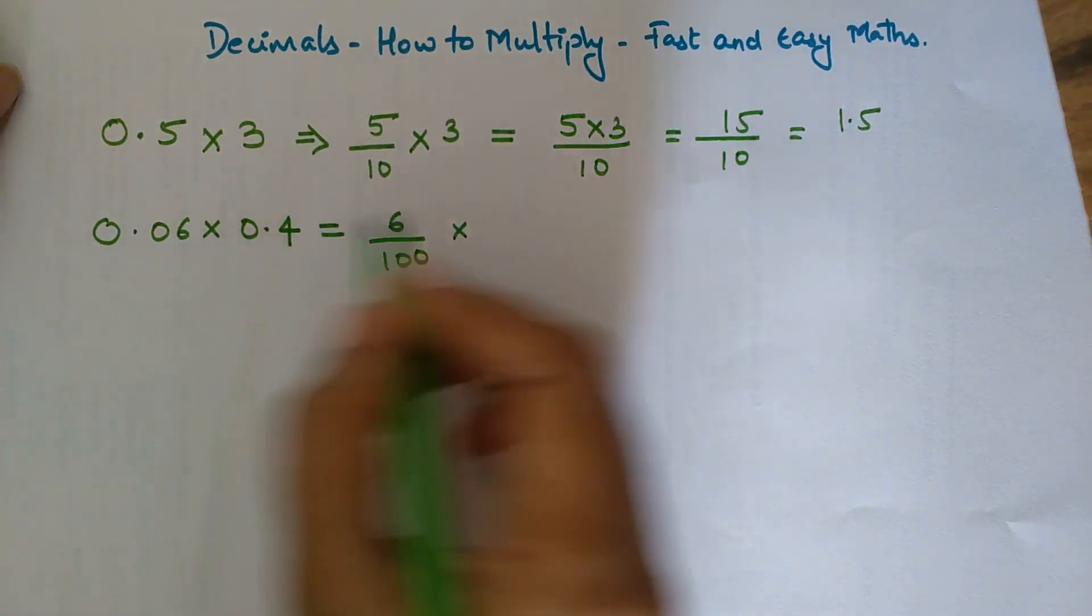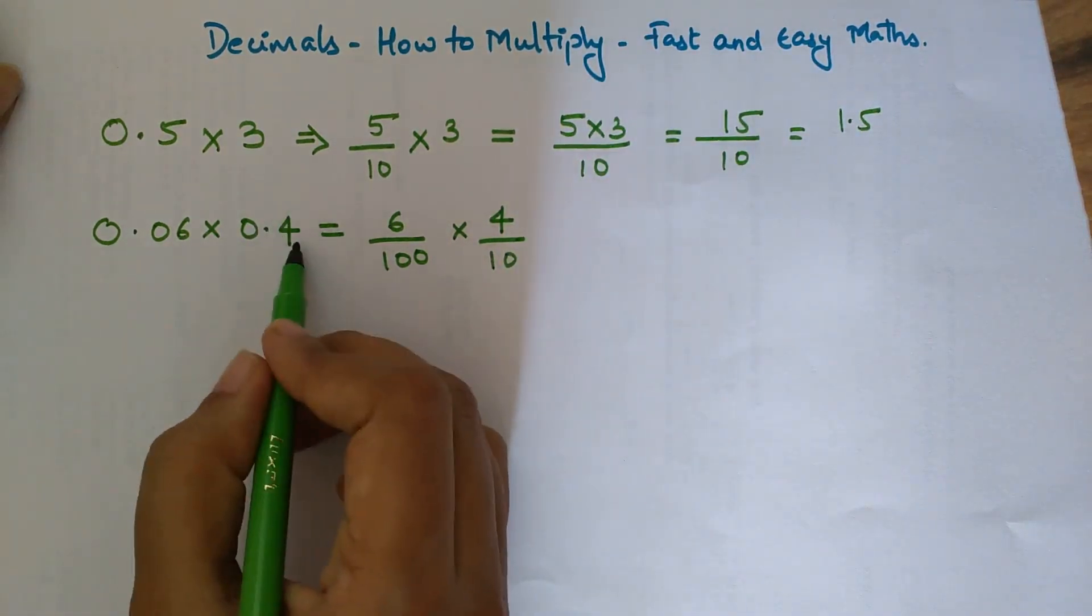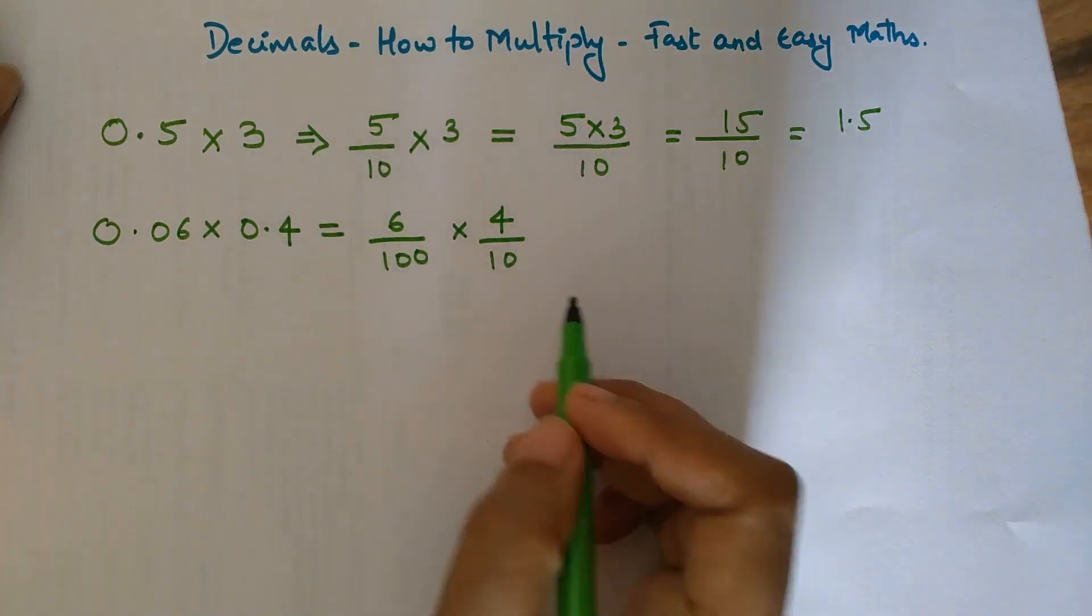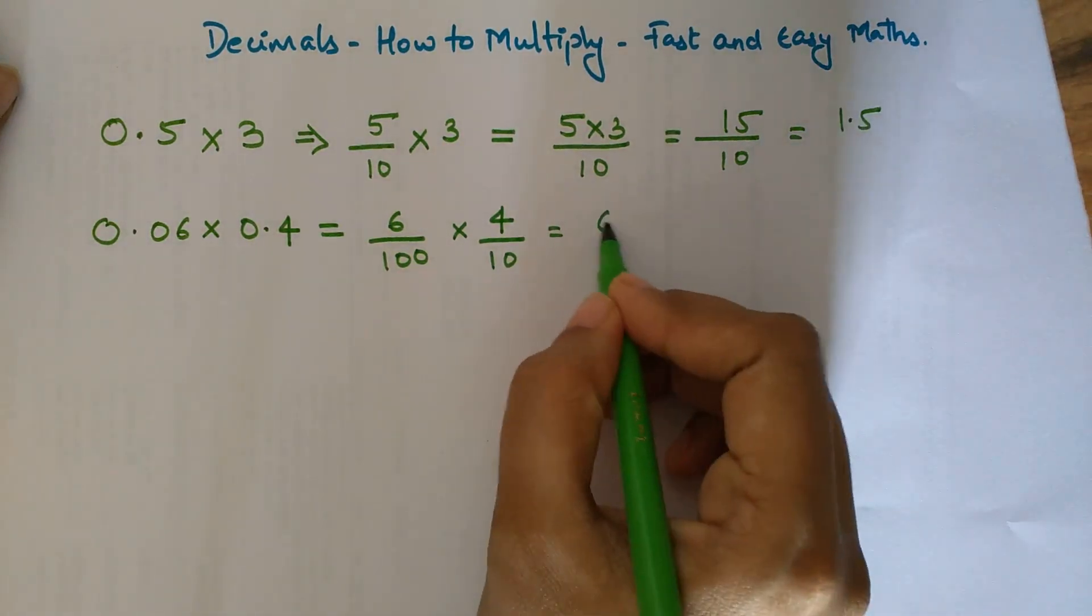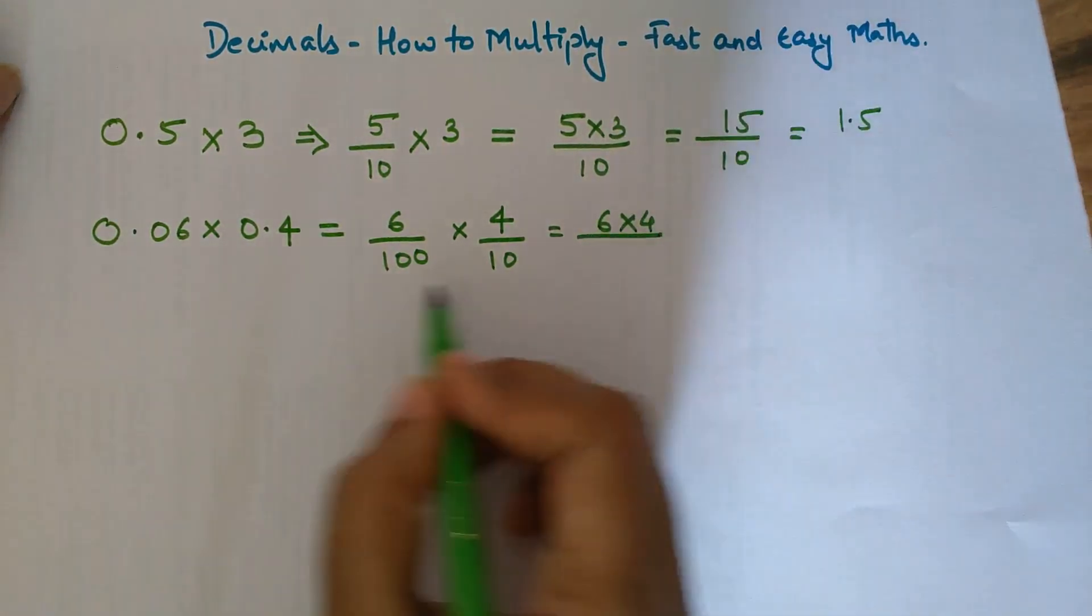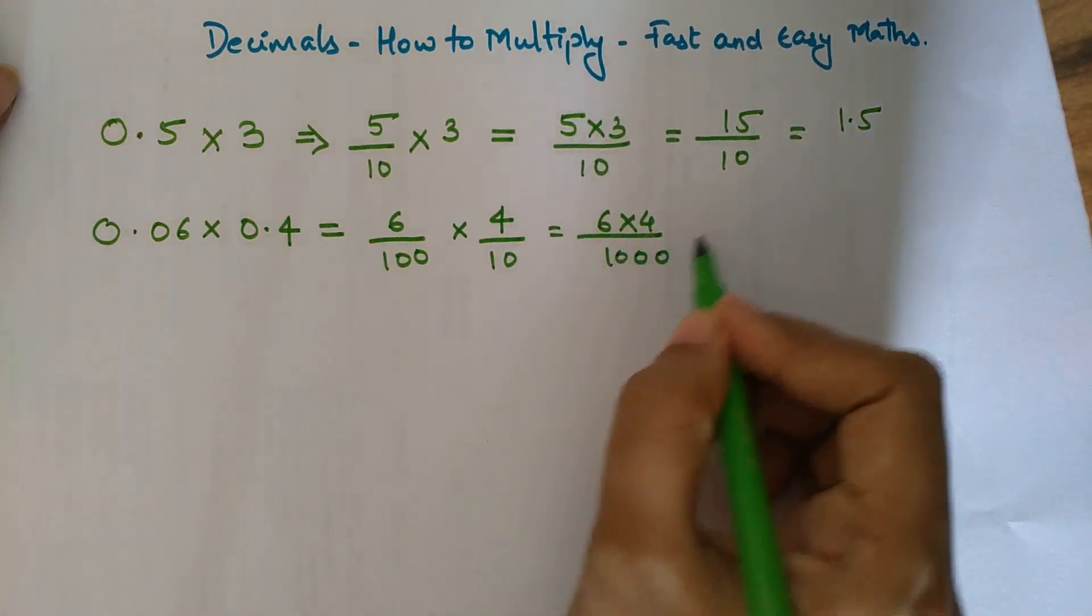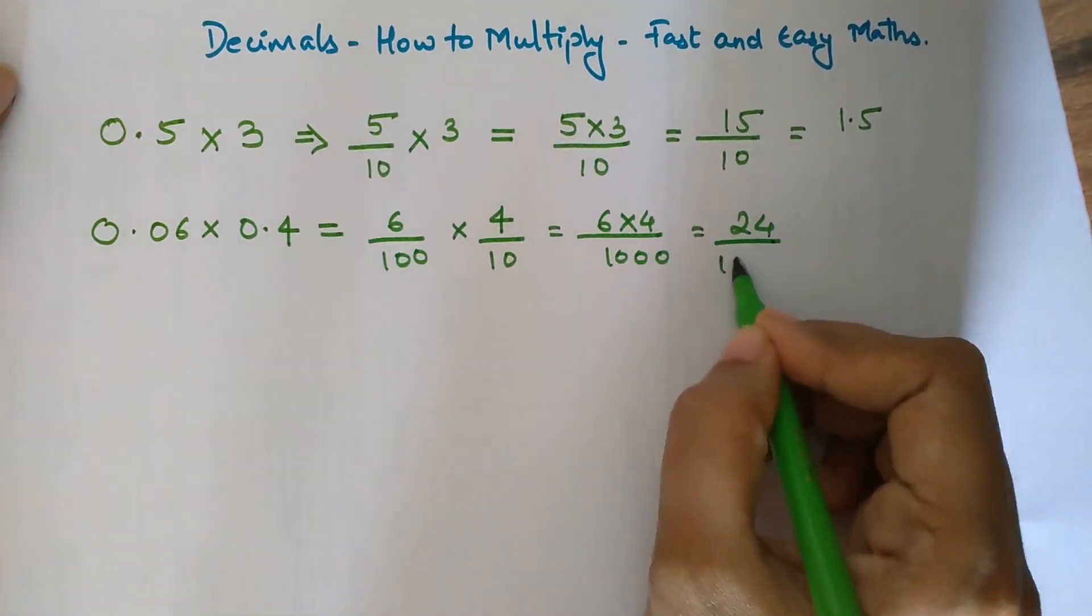Now 0.4 will be written as 4 upon 10 because there's just one digit after the decimal point. So we will have 6 into 4 upon 100 into 10, which is 1000. So 6 into 4 is 24 upon 1000.